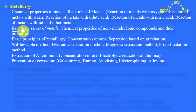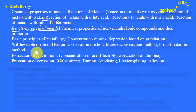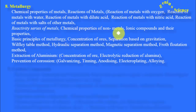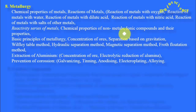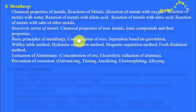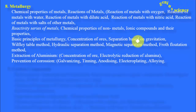The most important unit of the chapter is the reactivity series — this is very important. Then chemical properties of non-metals, ionic compounds and their properties. Then the basic principles of metallurgy: concentration of ores, separation based on gravitation.